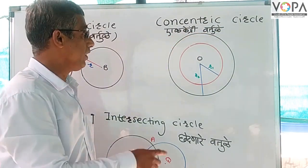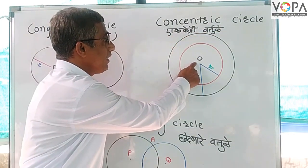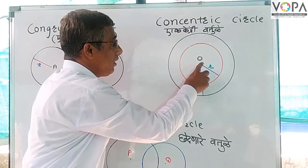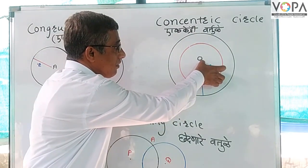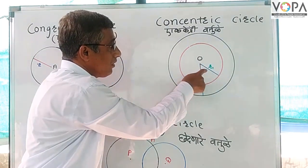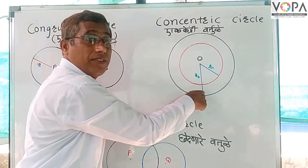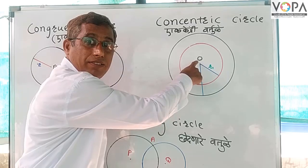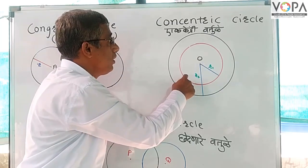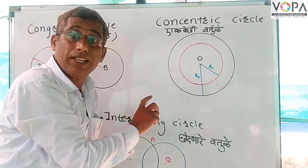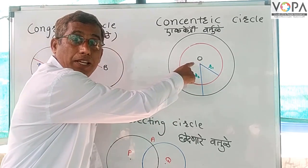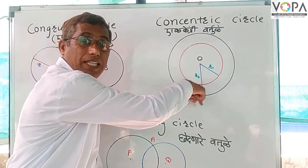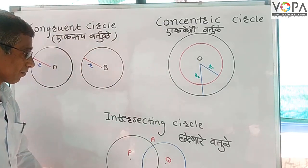O is the center of both circles. The radius of the inner circle is r1 and the radius of the outer circle is r2. Their radii are different but the center is the same, so we say that these are concentric circles.